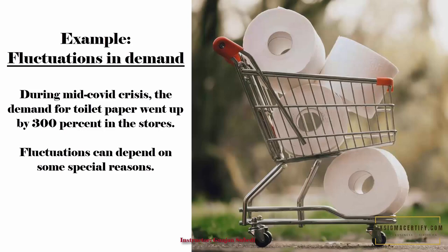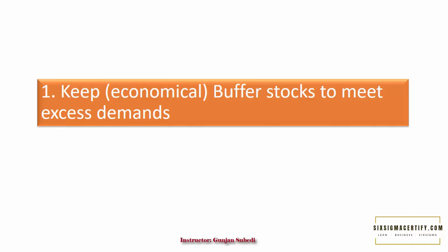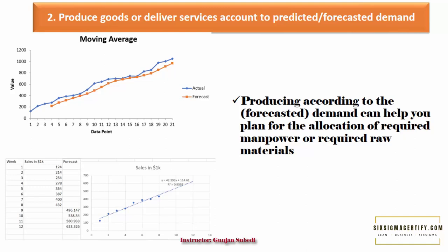However, we can always have some ways to fight Mura or unevenness. For example, we can have buffer stocks to meet any excess demand. But keep in mind that holding too much inventory adds up to the cost.